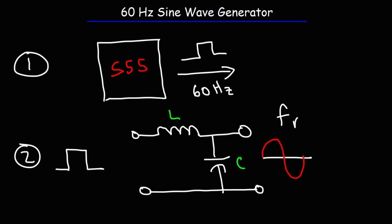Now the formula that you could use to help you get those values is this equation. The resonant frequency of the LC network is 1 over 2π√LC. Now you want the frequency of the timer to match the resonant frequency of the LC network. When that happens, the square wave will be converted into a sine wave.